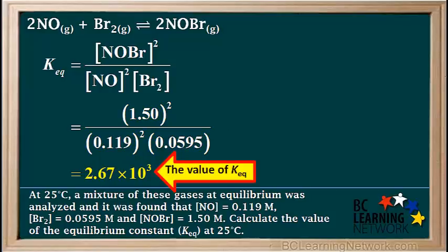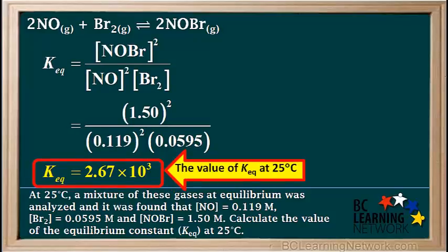Try this calculation on your calculator to make sure you get this value. So we can now summarize by saying that the value of the equilibrium constant K_eq at 25 degrees is 2.67 times 10 to the third.